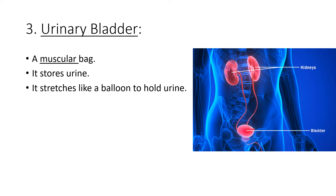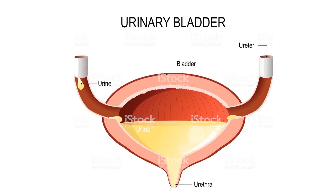The urinary bladder is a muscular bag — muscular means it's made out of muscle tissue — so it can stretch like a balloon to hold more urine. When you're ready to release the urine outside of your body, it will contract, meaning it squeezes itself to help release the urine. The main function of the bladder is to store urine until it's about three-fourths full. You can see in this picture how urine enters the bladder through the ureters whenever the kidneys produce urine.